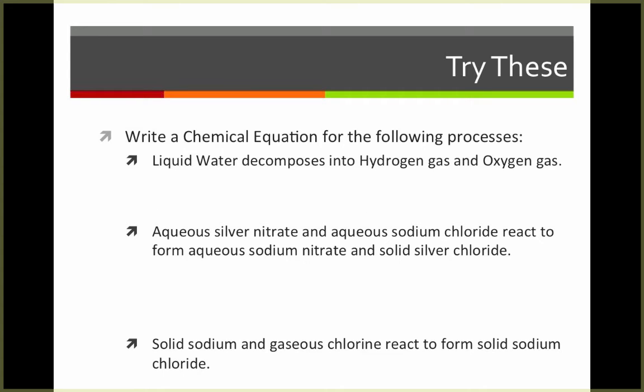Here's some to try on your own. We'll do the first one together, then you can pause the video and try the next two. Here we're told that our reactants are liquid water, so I'll write H2O, and I know it's a liquid, and that's going to produce or decompose to yield hydrogen and oxygen. So I'm going to write an arrow to indicate yields, and then I know that hydrogen is a diatomic molecule, so I get H2, and oxygen is a diatomic molecule, so I get O2. This is the formula equation for this process.